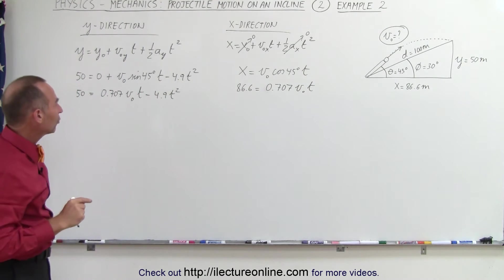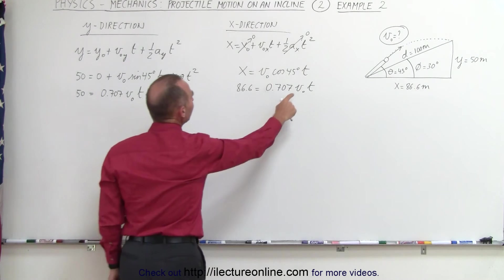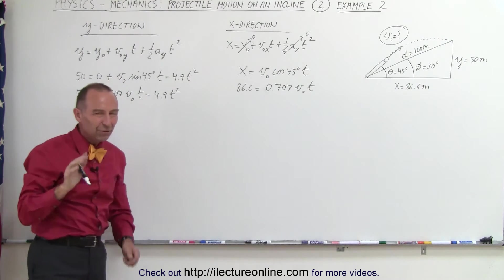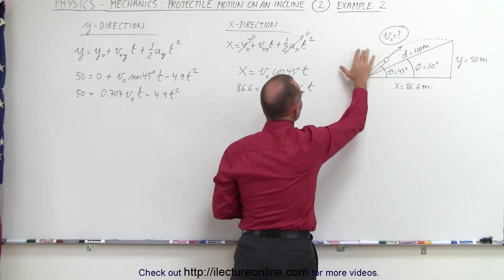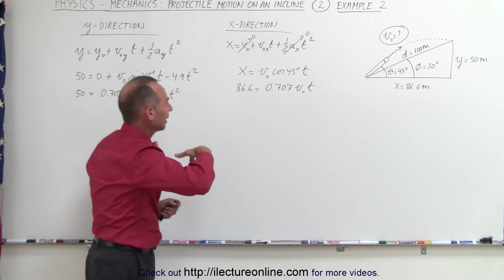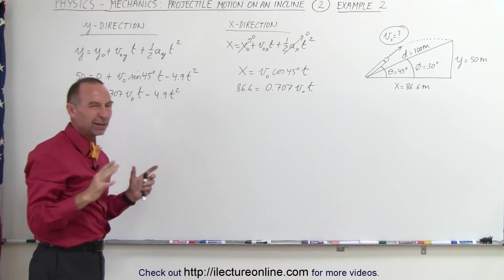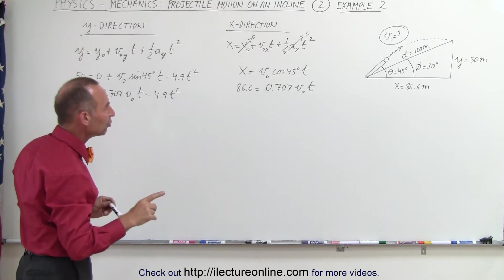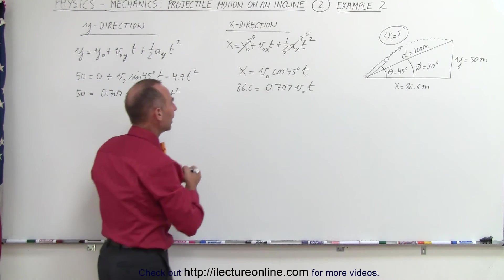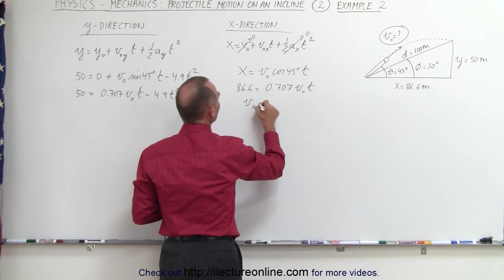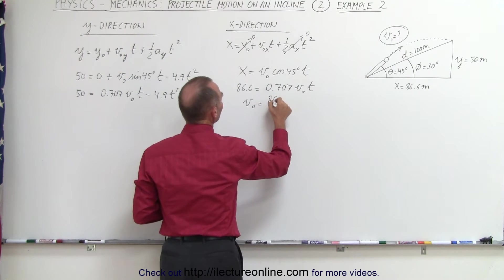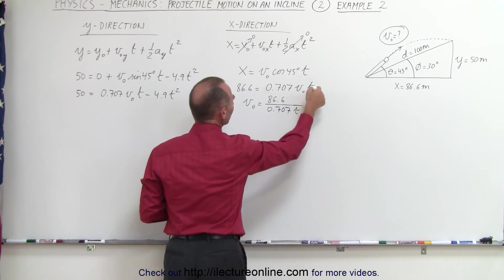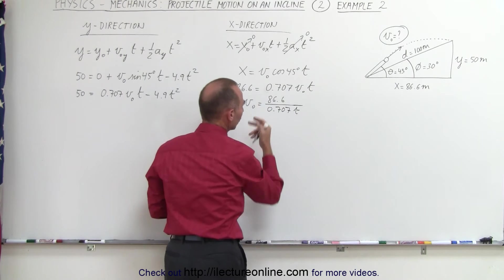This allows us to solve for v initial in terms of time. Substituting that into the y equation, even though we're looking for v initial, if we substitute for time instead it would become a very messy quadratic equation. So it's probably easier to solve the x equation for v sub not. We can say that v sub not equals 86.6 divided by 0.707 times t.